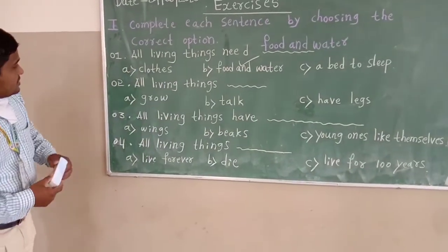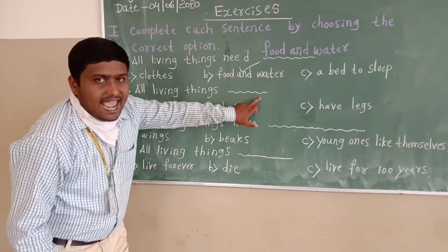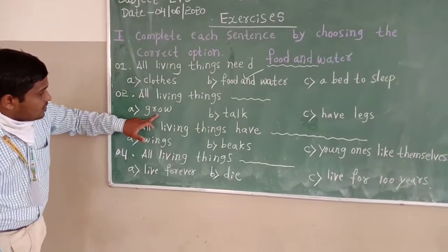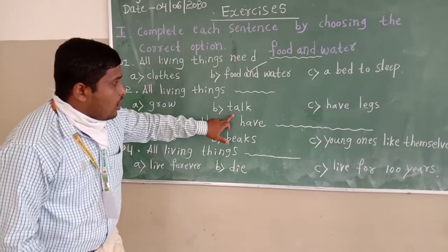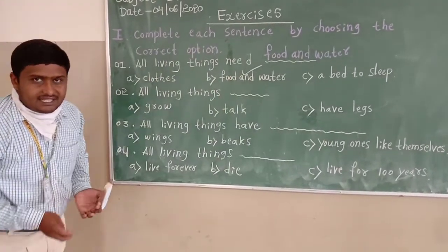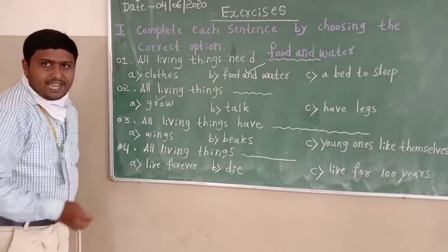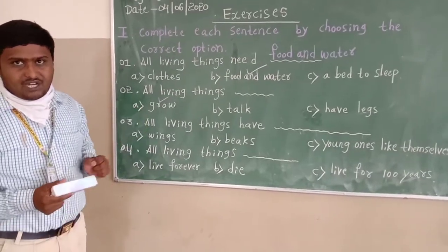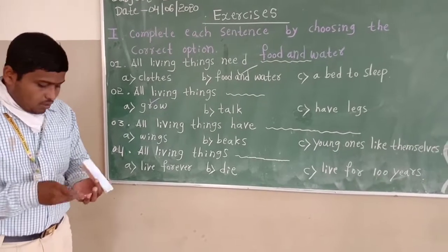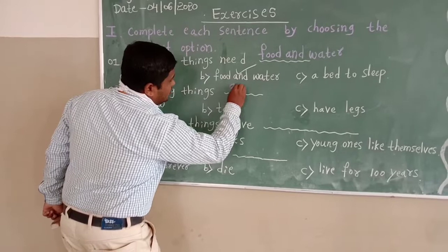Next, second: all living things need blank. The options are: grow, talk, have less. The correct answer is grow. This is also one characteristic of living things — all living things grow. Now I am writing: grow.